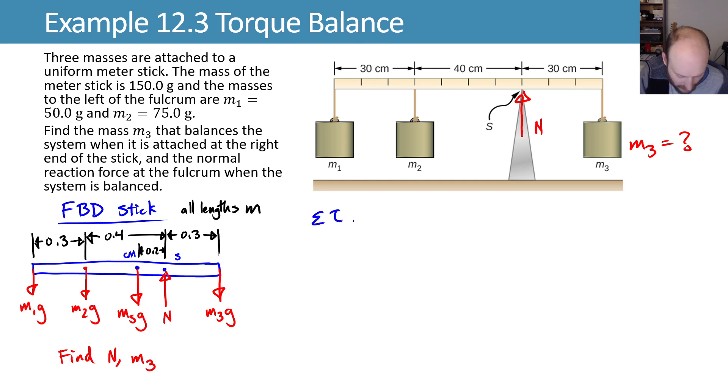I'll sum my torques about point S, calling counterclockwise positive, and those sum to zero. This is an equation of static equilibrium. And I do this so that that unknown force n will not appear, because it's acting directly on there. It has no tendency to spin about that point, summing the torques about point S.